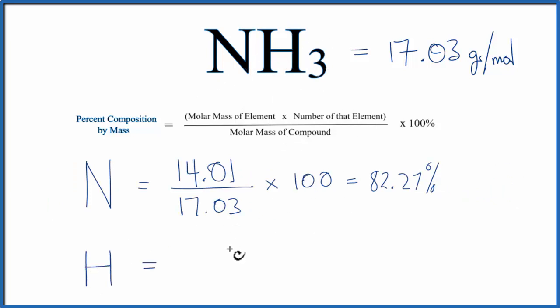So we have hydrogen. The atomic mass for hydrogen on the periodic table is 1.01 and the number of hydrogens we have three. So we'll multiply that by three.